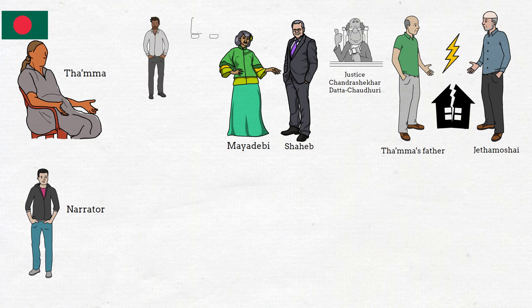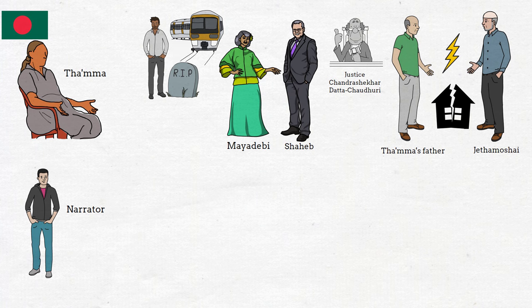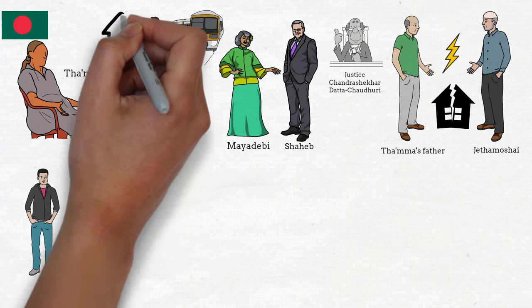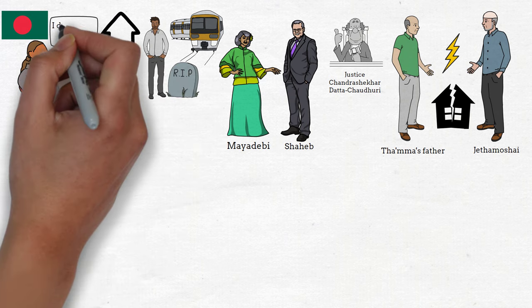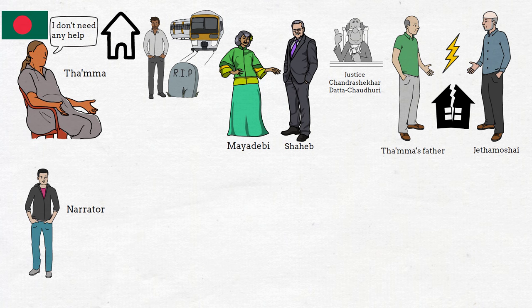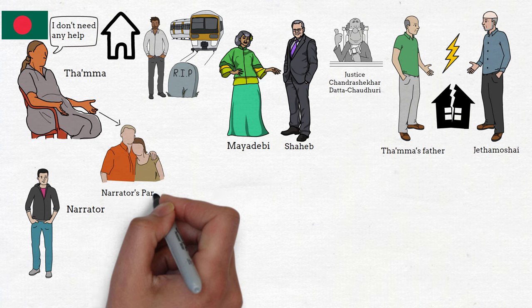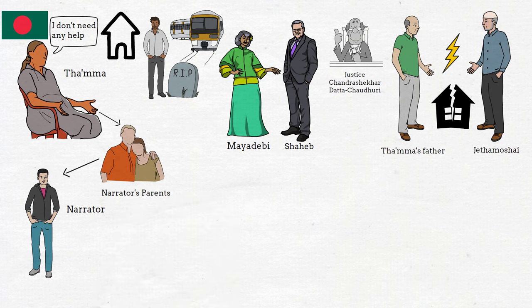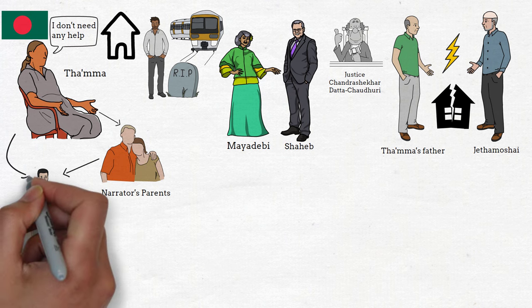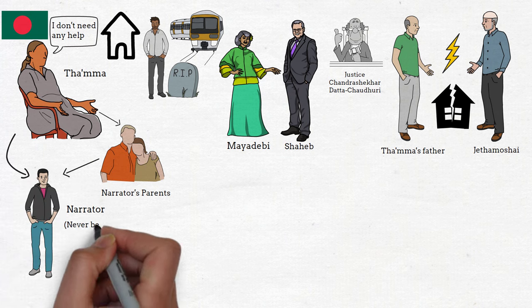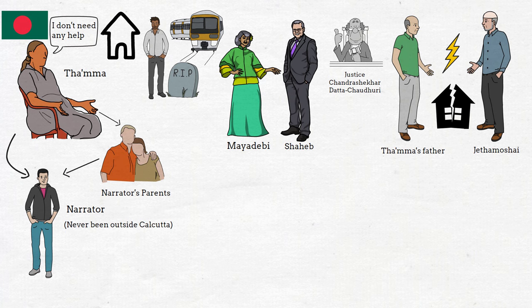Thama marries a man who works on the railroad. Unfortunately, Thama's husband dies. But Thama is hardworking, mentally strong, and has a lot of patience. She decides to become a teacher and declines all sorts of support from anyone. She is a strong lady. She has a son who gets married to a girl, and from these two, the narrator of the story is born. The narrator is from a humble family, and his grandmother Thama is a very hardworking woman. The narrator has never been outside Kolkata.